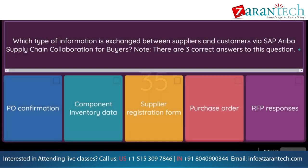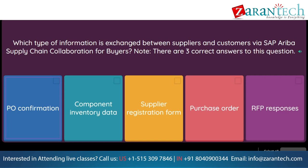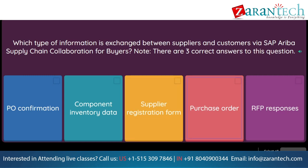Question: Which type of information is exchanged between suppliers and customers via SAP Ariba Supply Chain Collaboration for Buyers? Note, there are three correct answers to this question. Option 1: PO confirmation. Option 2: component inventory data. Option 3: supplier registration form. Option 4: purchase order. Option 5: RFP responses.